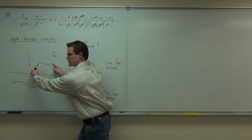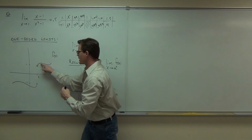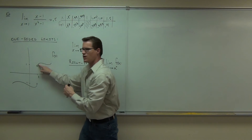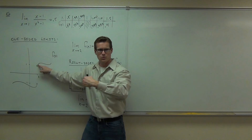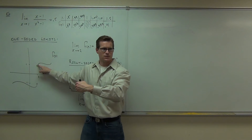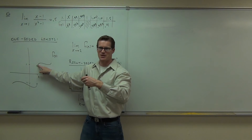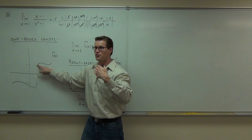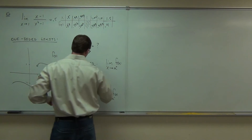What's happening to the value of the function — the height of my finger — as my finger is approaching the number two from the right? The height of my finger is trying to get to one as I'm approaching two from the right. So from the right, it's going to be approaching one.